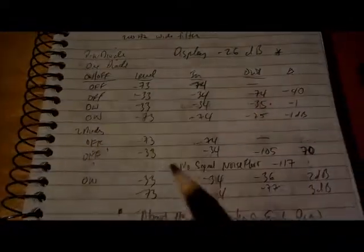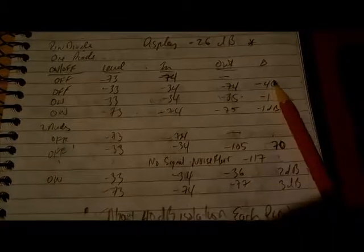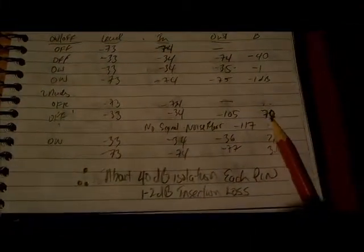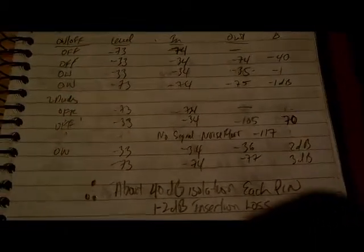Just one final thing about the pin diodes. I did some testing with the pin diodes and what I found is that each pin diode gives me an isolation of about 40 dB and an insertion loss of about 1 dB. If I have two pin diodes cascaded together, I'm getting about 70 dB isolation, which is pretty good.